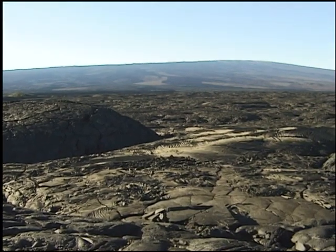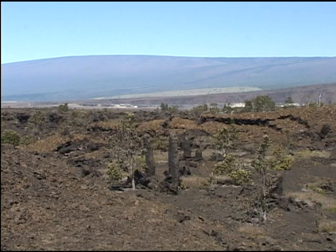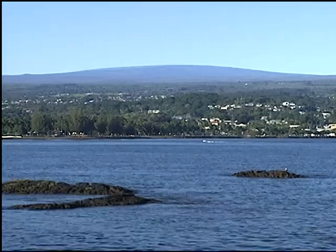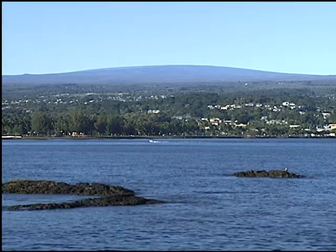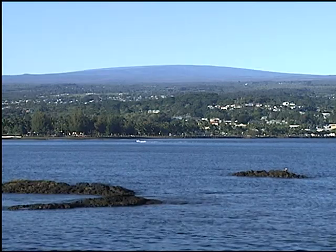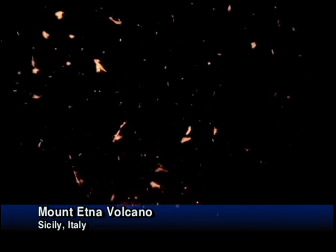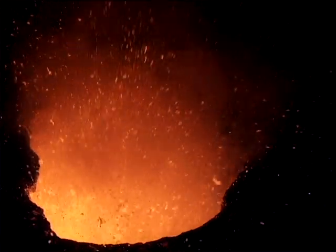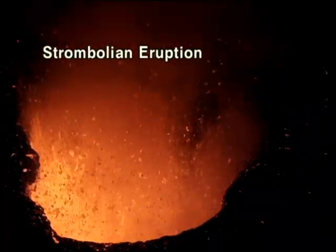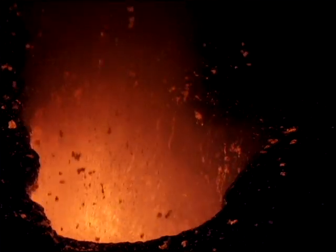Repeated eruptions of fluid lava can build enormous shield volcanoes. Mauna Loa, the world's largest volcano, rises nearly 30,000 feet above the surrounding seafloor. Eruptions of more viscous basaltic lava produce pulsating strombolian explosions. The higher viscosity is due to either the original magma composition, or to cooling in the magma chamber prior to eruption.